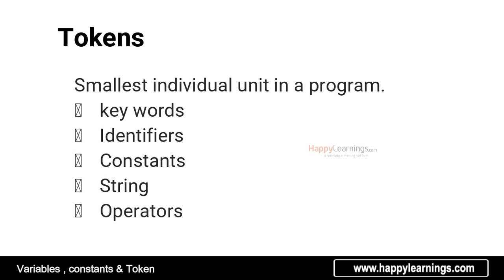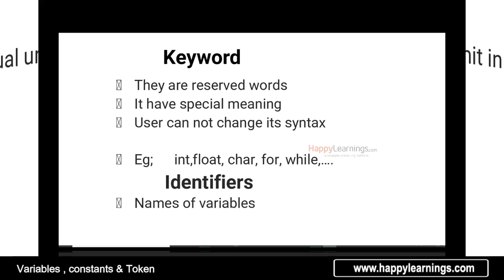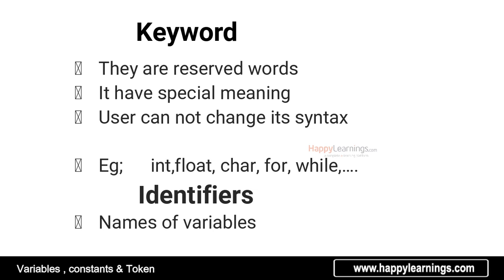The smallest units are keywords, identifiers, constants, strings, and operators. These are the smallest units. Once you select keywords, you can select any keywords. You cannot use a reserved keyword as the name of a variable. We use identifiers as the name of the variable.